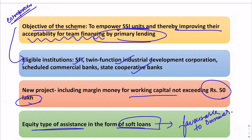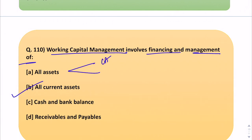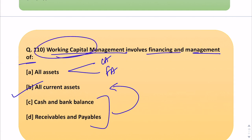The last question says working capital management involves financing and management of what. The correct answer is all current assets. Why not all assets? Because all assets includes fixed assets as well, whereas working capital specifically concerns current assets. Working capital is the capital used by a business in its day-to-day trading operations, calculated as current assets minus current liabilities.